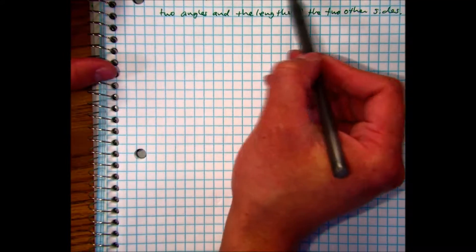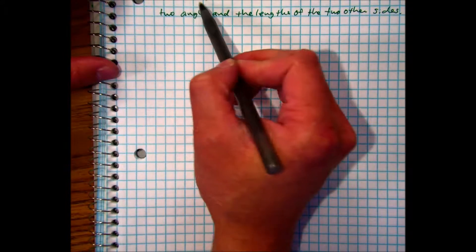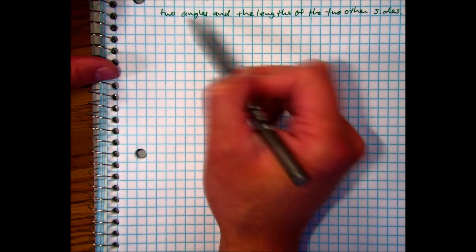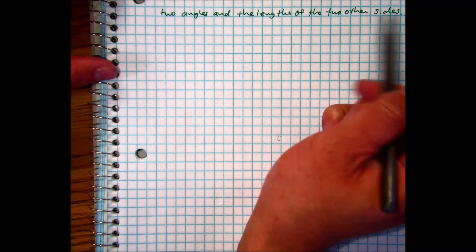A right triangle with a hypotenuse of 8 includes a 37 degree angle. Find the measures of the two angles and the lengths of the two other sides.